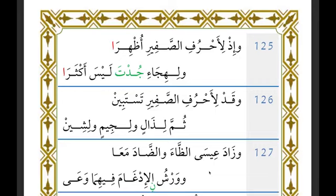You do not do idgham for Naafi'. For example, 'walawla idh sami'tumuhu' — you recite with idhhar. Likewise 'wa idh zayyanahal' — idhhar. Likewise 'wa idh sarafna' — you do not say 'waidh-sarafna' with idgham. And for the jim, 'idh ja'ukum' — you say 'idh ja'ukum' with idhhar. Likewise 'idh tastighithuna rabbakum' and 'idh dakhalu alayhim' — all recited with idhhar for Naafi'.